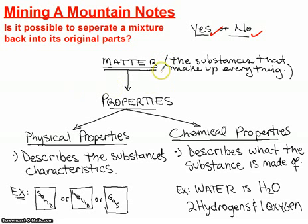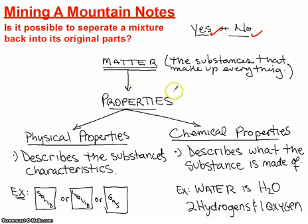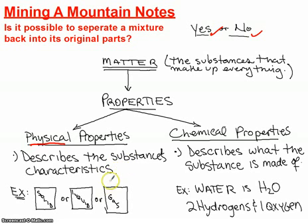We said that matter is the substance that makes up everything. If it makes up everything, then it must have mass, it must take up space, and it must have properties. Those properties are physical properties — a description of a substance's characteristics, like is it a solid, a liquid, a gas? Is it white? Is it flexible? Is it soft? It's a description of the thing.